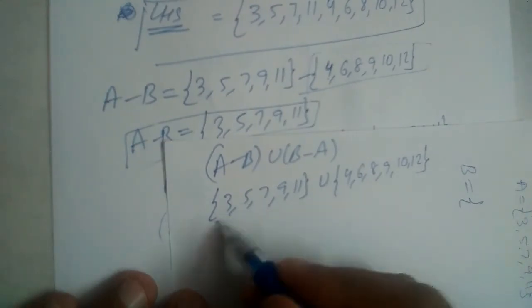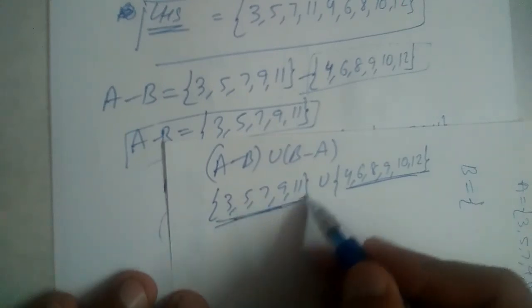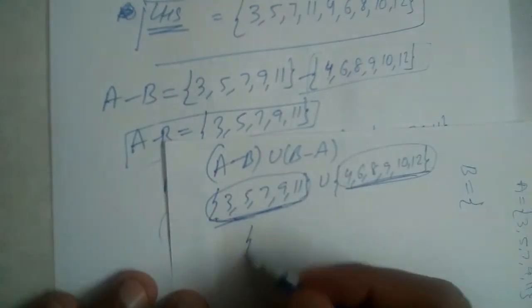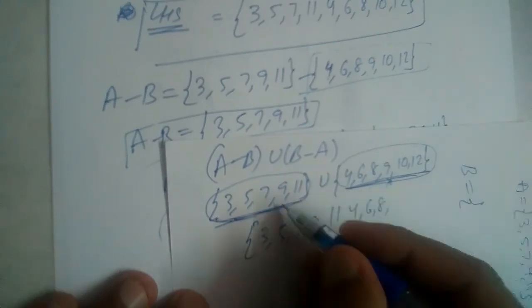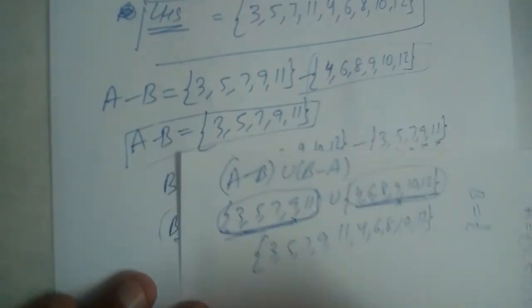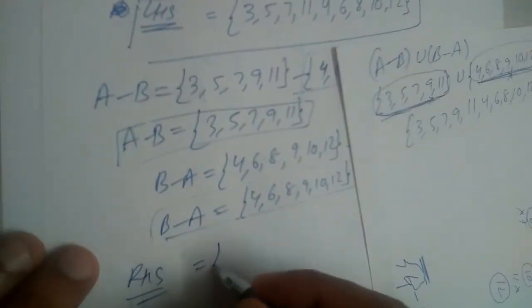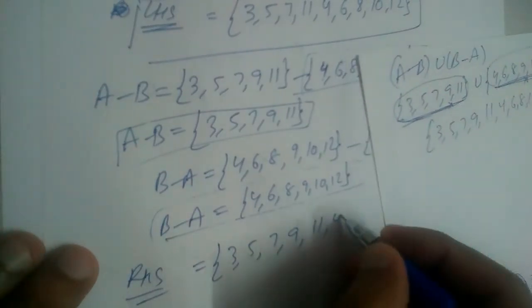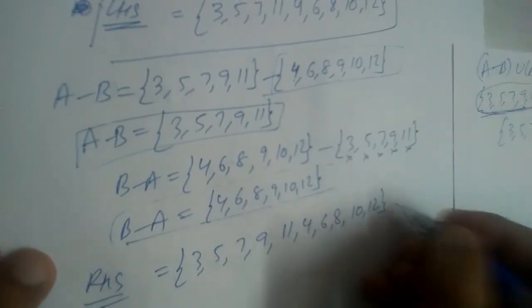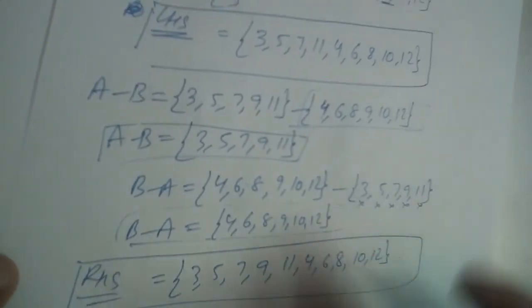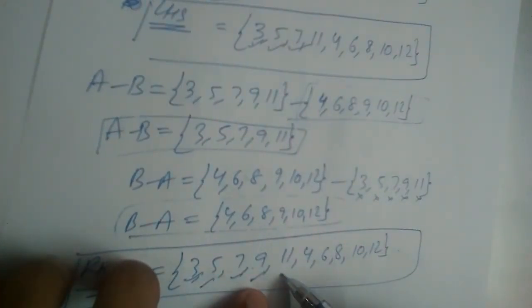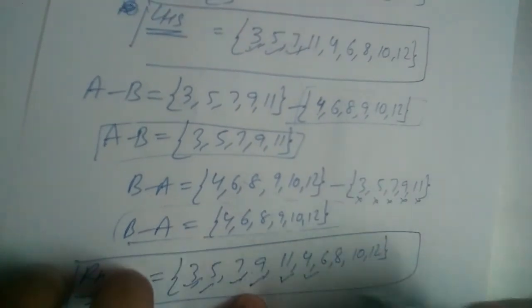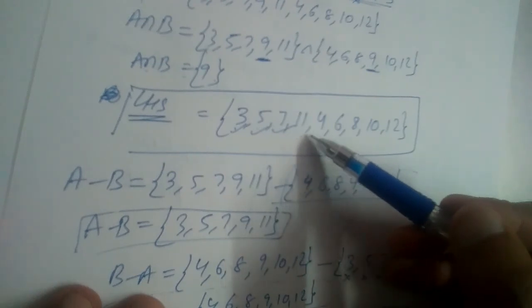Taking the union of A minus B and B minus A, all elements from both sets are written without repetition. So A minus B union B minus A gives 3, 5, 7, 9, 11, 4, 6, 8, 9 is repeated so skip it, 10 and 12. RHS is {3, 5, 7, 9, 11, 4, 6, 8, 10, 12}. Checking against LHS: 3, 5, 7 match but 9 appears in RHS and not LHS.